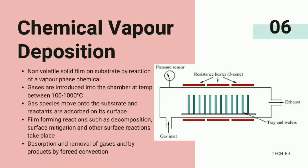CVD is used to deposit non-volatile solid film on substrate by reaction of a vapor phase chemical. The desired gases are introduced into the chamber at high temperature and low pressure. The gases move over the substrate, and the substrate absorbs reactants onto its surface. The film is formed by surface reactions such as decomposition and surface migration. The by-products are then desorbed and removed from the chamber by forced convection.